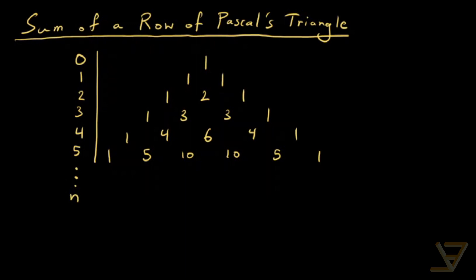And actually we keep going because Pascal's triangle has infinitely many rows. And now what we're going to do is we're going to find the sum of each row.